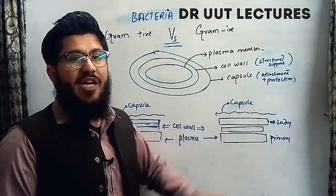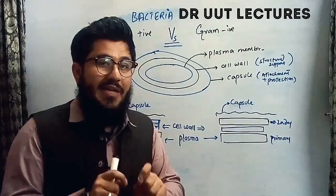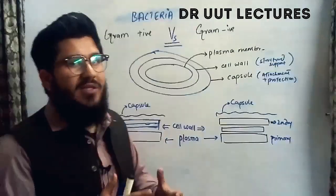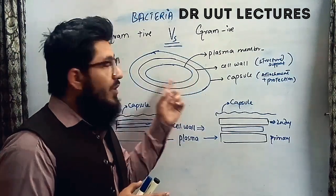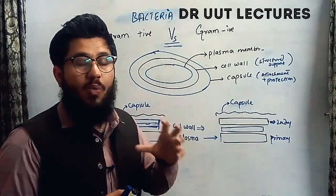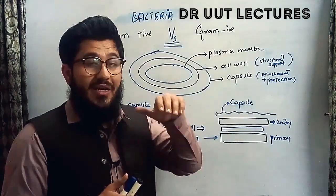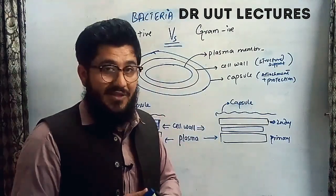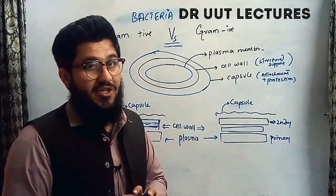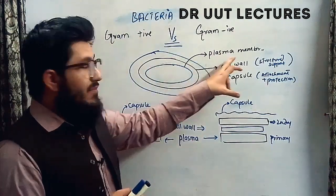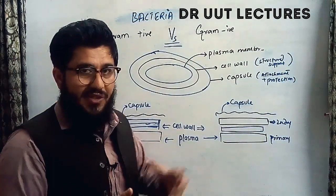The plasma membrane is actually a lipid bilayer — it means two lipid layers combined together make the plasma membrane. The function of the plasma membrane is very obvious: it actually holds the cellular content, whatever is present inside the cell. In this lecture, we are not going to study the internal content of the cell; we are just going to study the external structure of the bacteria.